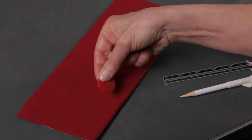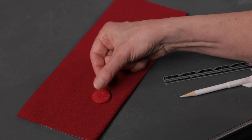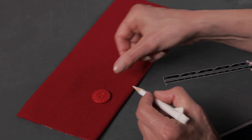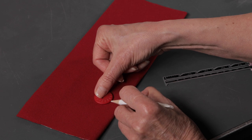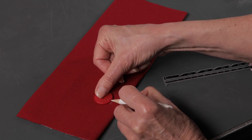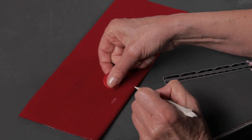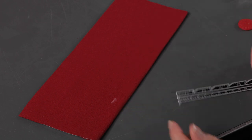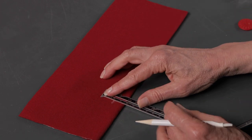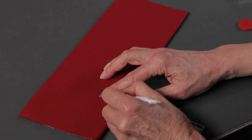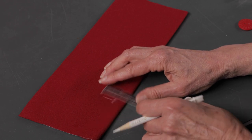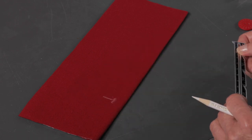Now place your button where you want to sew the buttonhole and mark one end of the buttonhole on the fabric with your marking tool. Use your small ruler to mark the center area of the buttonhole. This will help us know where to place the fabric under the buttonhole foot.